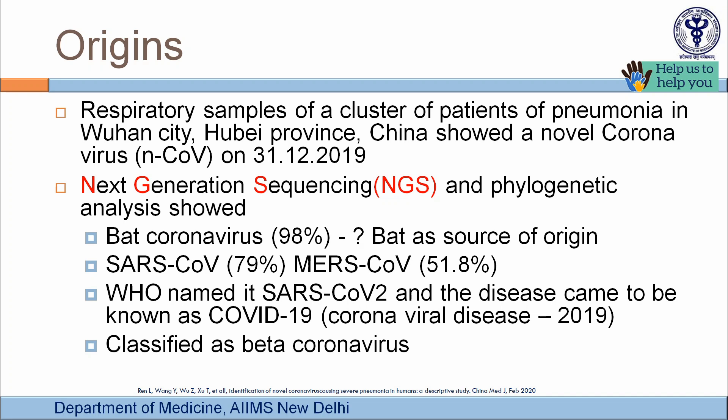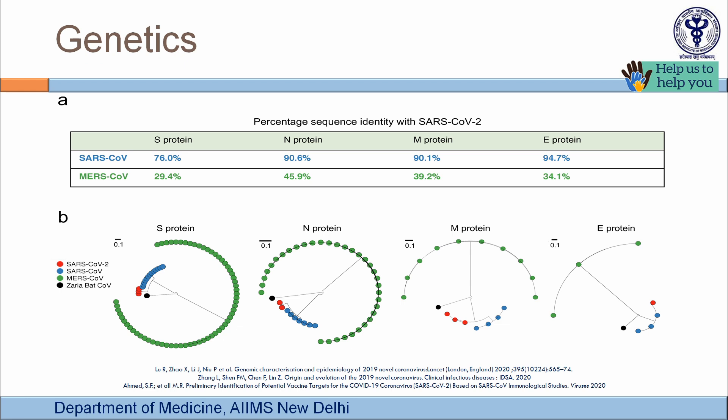Because of greater homology with SARS-CoV, it was named SARS coronavirus 2, and the disease it causes was named Coronavirus Disease 2019, abbreviated COVID-19. It is classified as a beta coronavirus. At the protein level, SARS-CoV-2 shows 76% homology with SARS-CoV on the S protein, 90% on N protein, 90% on M protein, and 94% on E protein.